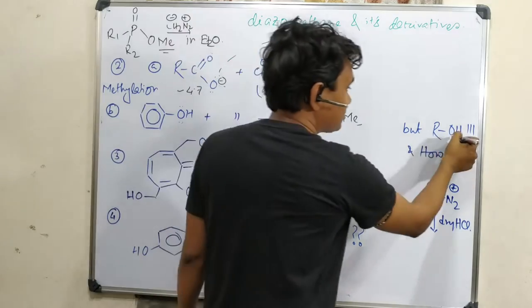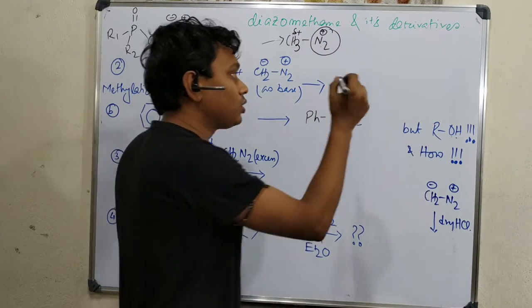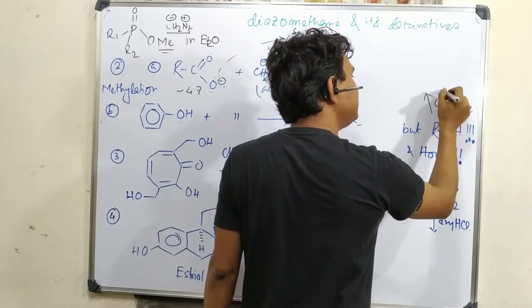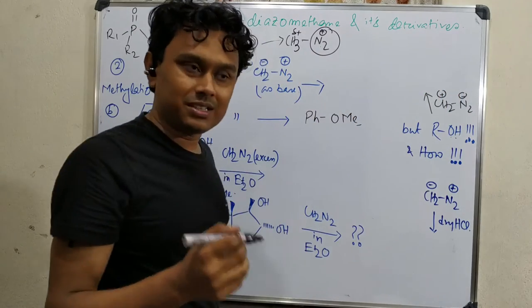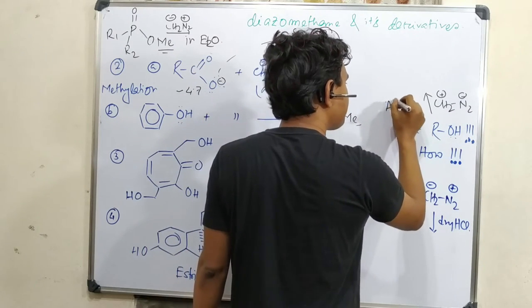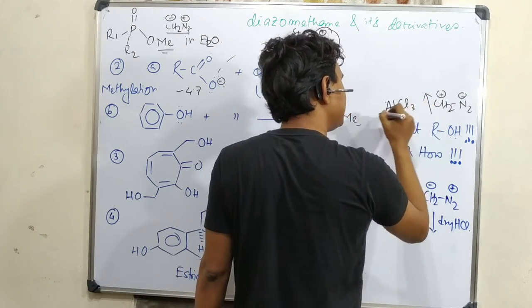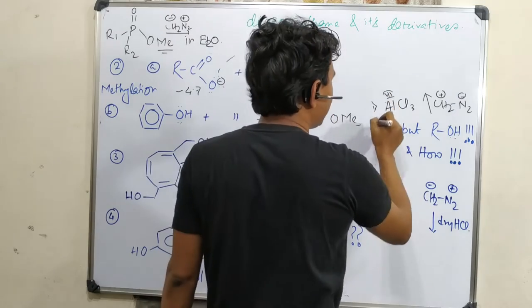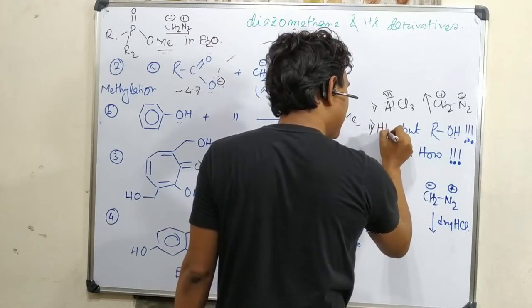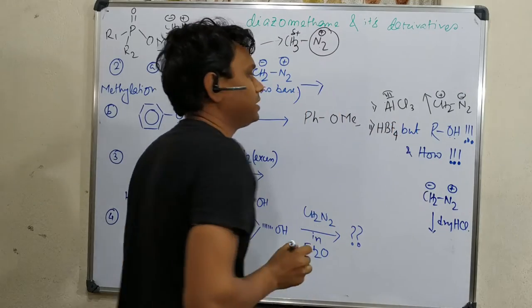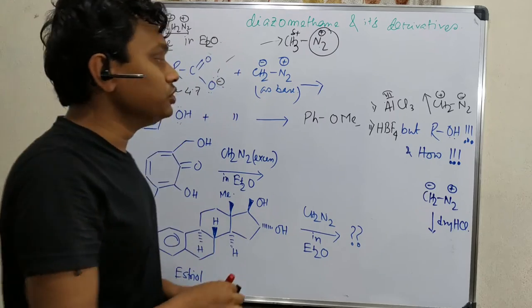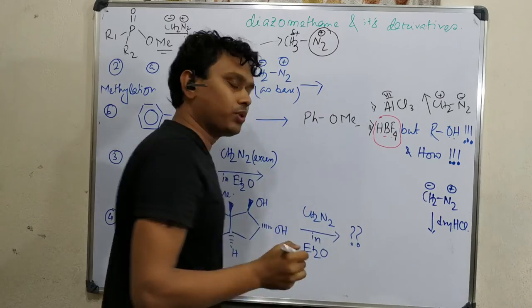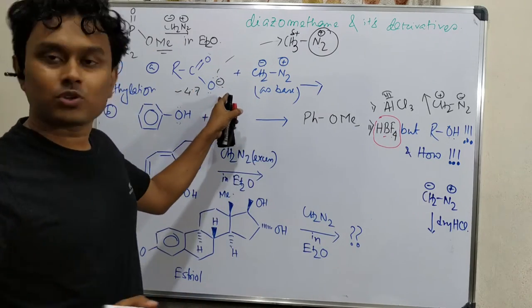That is the reason for this acidity. But in case of alcohol, it is not sufficiently acidic. That is the reason to get the conversion of alcohol to corresponding methyl ether we need an activating reagent, for example a Lewis acid like AlCl3 or aluminum trichloride. Another method is a simple acid like HBF4, but the acid has a criteria - it should be non-nucleophilic, means non-nucleophilic protic acid.